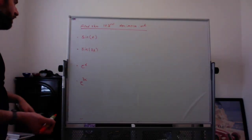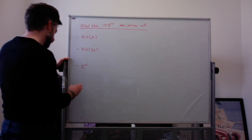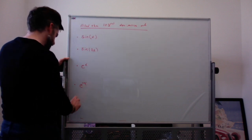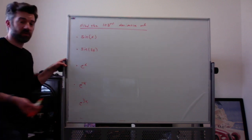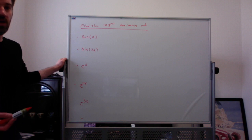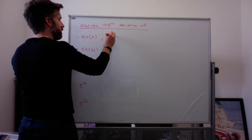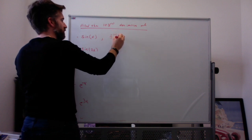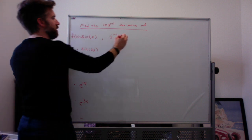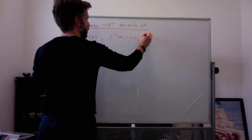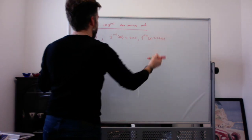For cases with lots of derivatives, consider the 103rd derivative of sine. We know every 4th derivative of sine is equal to sine. So for f(x) = sine of x, the 4th derivative equals sine of x, the 8th derivative equals sine of x, and every multiple-of-4 derivative equals sine of x.